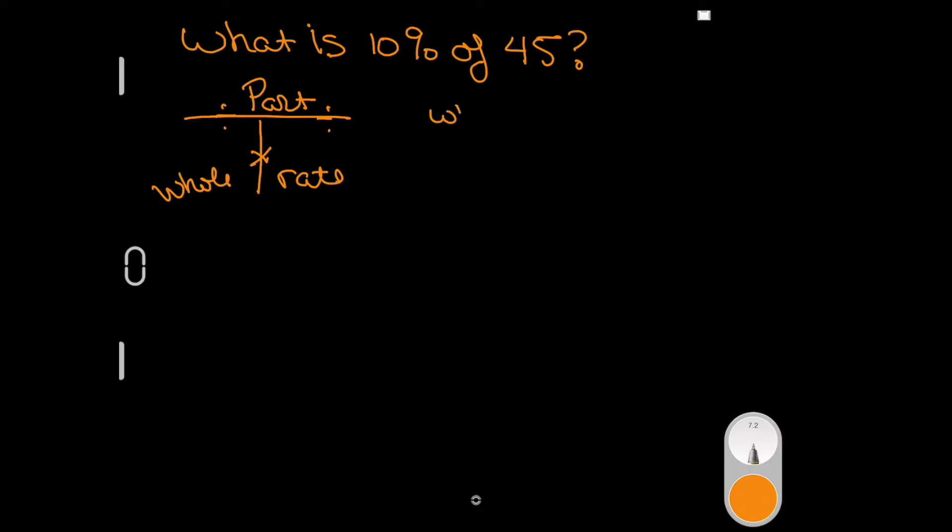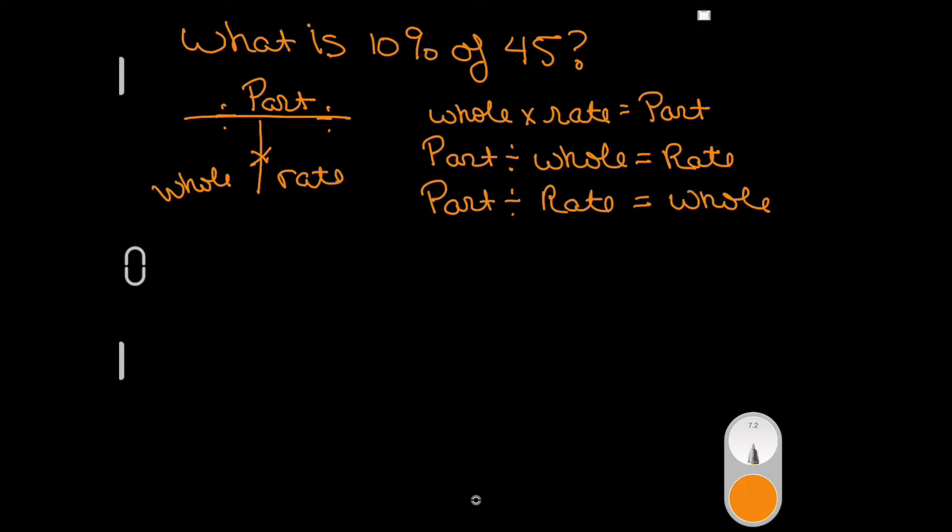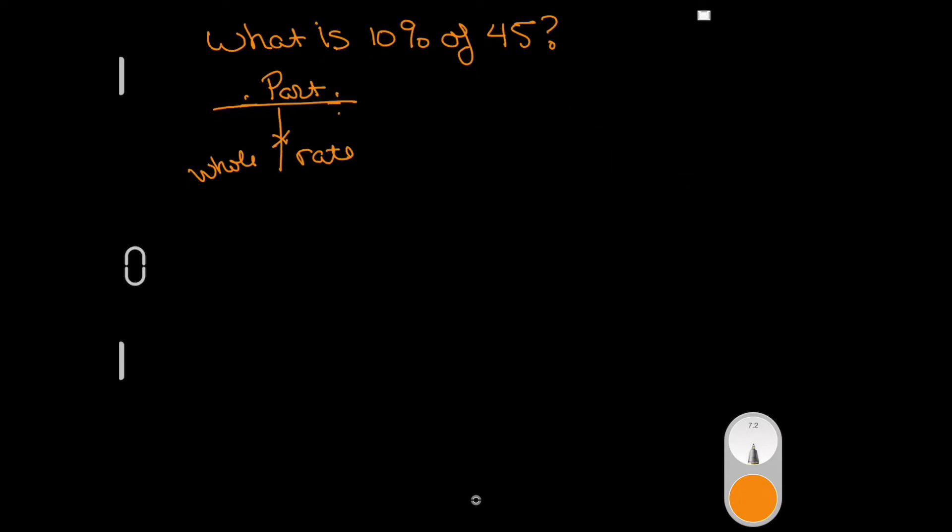Because you know a whole times the rate equals a part, we know part divided by whole equals a rate, and we know part divided by a rate equals whole. Again, if you did this algebraically you would say 45 times 10 percent equals 4.5. But you could also say 4.5 divided by 10 percent is going to give you 45, and you could say 4.5 divided by 45 equals 10 percent. What is 10 percent of 45?